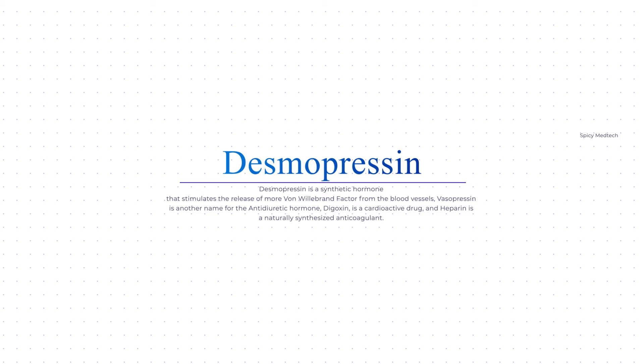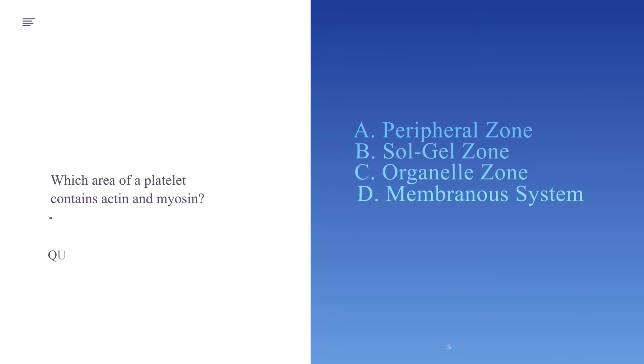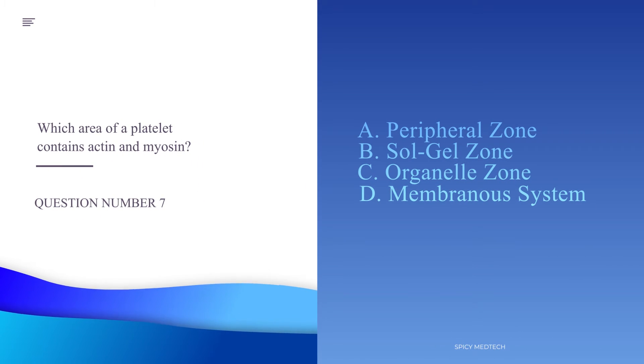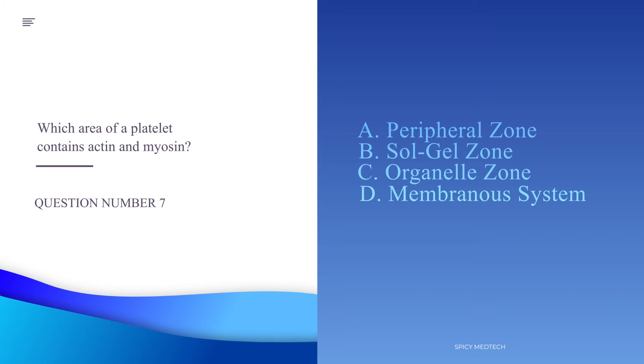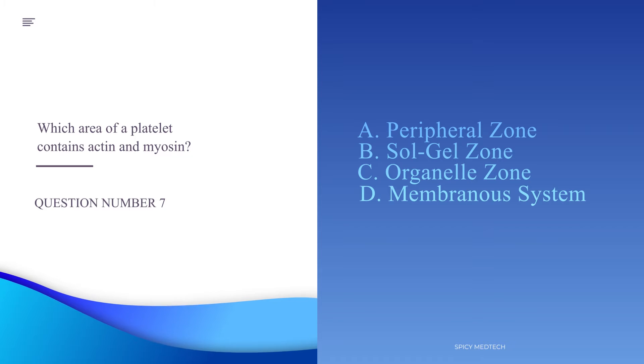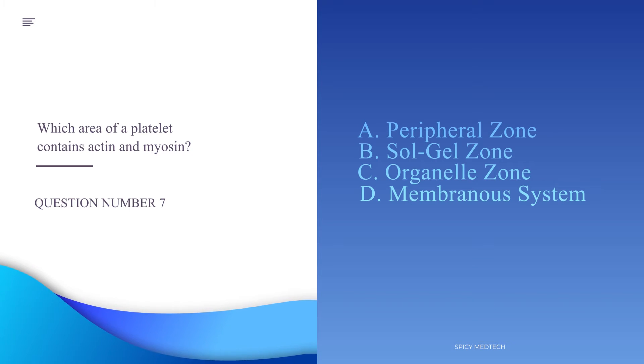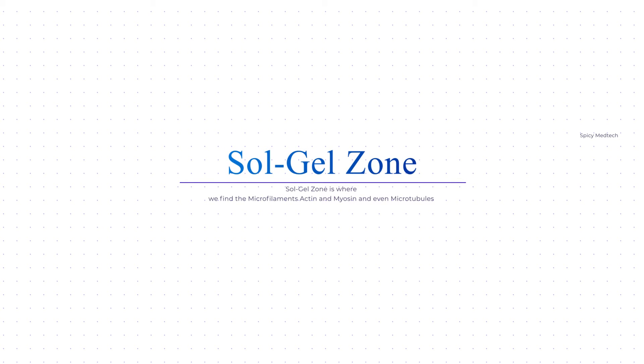Number seven: Which area of a platelet contains actin and myosin? A. Peripheral zone, B. Sol-gel zone, C. Organelle zone, or D. Membranous system. The answer is letter B, the sol-gel zone. The sol-gel zone is where we find the microfilaments actin and myosin, and even microtubules. When platelets are stimulated, actin and myosin interact to form actomyosin, which is a contractile protein important in clot retraction.